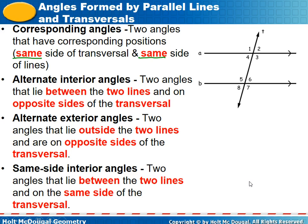Alternate interior angles: 'alternate' means different sides of the transversal, and 'interior' means inside the parallel lines. The first word tells how they relate to the transversal; the second tells how they relate to the parallel lines. Angles four and six are on opposite sides of the transversal and inside the parallel lines. Angles five and three are also alternate interior angles. These are congruent — you can tell because they're either both acute or both obtuse and they match.